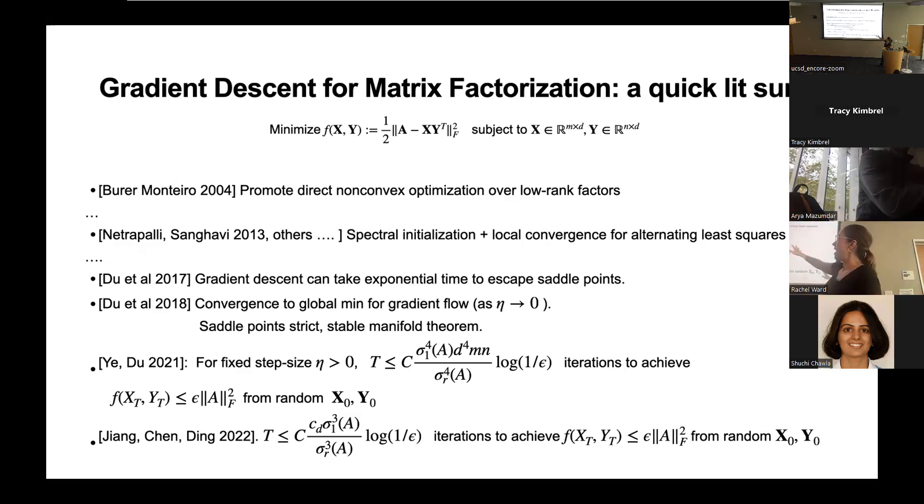And then later on, people said, well, what we know in practice, we don't need that spectral initialization. In practice, you just do a random initialization and you can get global convergence. So Du et al in 2017 and others started to say, let's just use gradient descent directly, global convergence. They showed that in the worst initialization, it's not good. It can take exponential time to escape saddle points. So we can't initialize at zero. We're going to have to give an initialization-dependent kind of rate or with high probability.